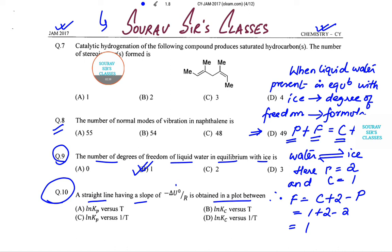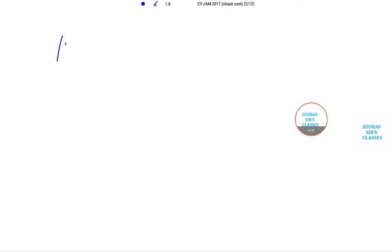So for this I require some space. Now it was given to us that K subscript C is equal to A times E to the power minus delta U not by RT. Now let me take a log transformation, so it becomes a little easy. So natural log Kc is equal to natural log A minus U not by RT.